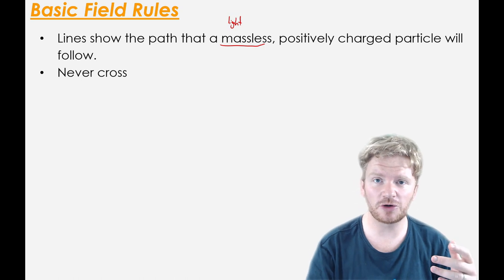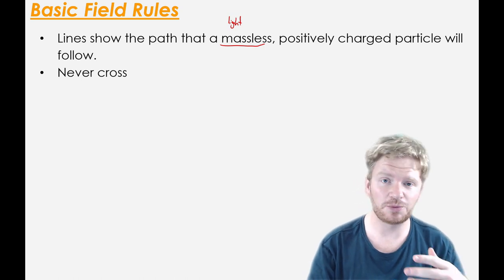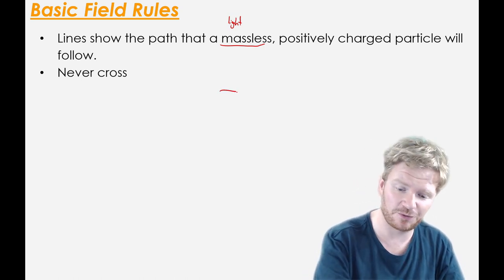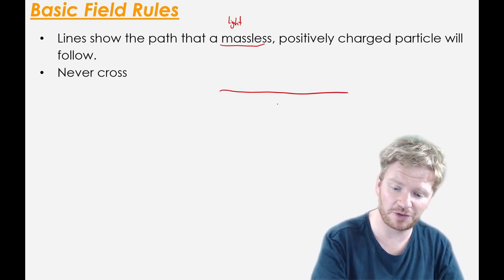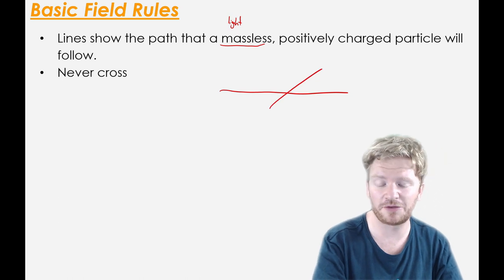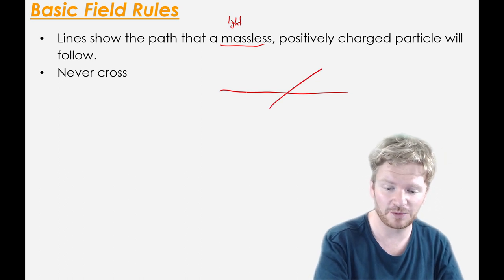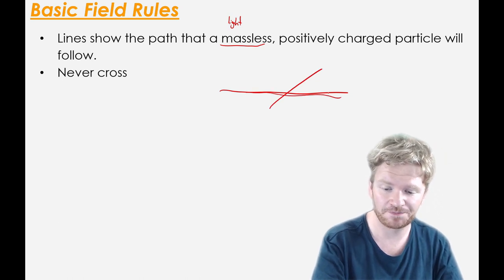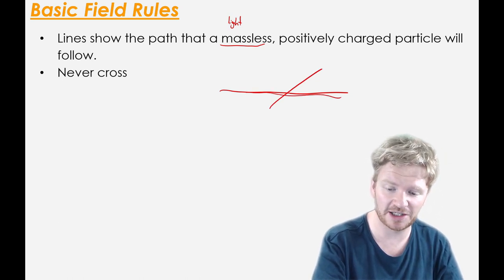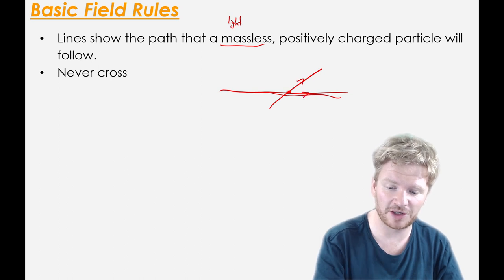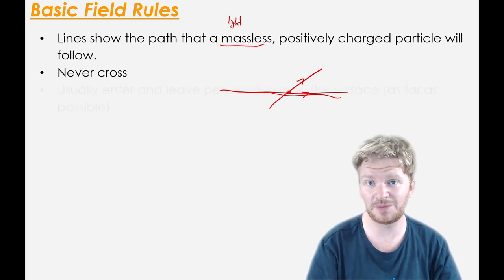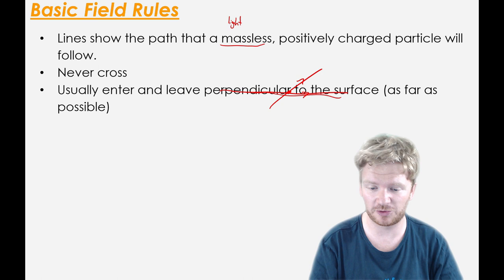Field lines never cross, for the simple reason that if I'm following this path, it doesn't make sense for there to be a second path going that way. If I'm going from here to here, the idea of a field line is I shouldn't have to choose whether to go that way or that way. So it makes sense for them not to be able to cross.